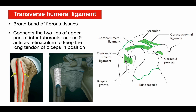The transverse humeral ligament is a broad band of fibrous tissue which connects the two lips of the upper part of the intertubercular sulcus (bicipital groove) and acts as a retinaculum to keep the long tendon of biceps in its proper position. In the diagram we can see the lateral lip, medial lip of the bicipital groove, and the long tendon passing deep to the transverse humeral ligament held in position by this retinaculum.